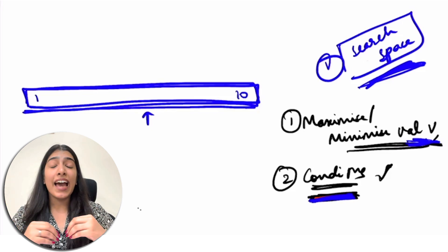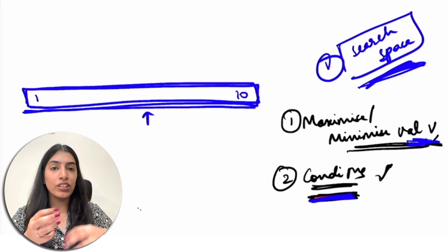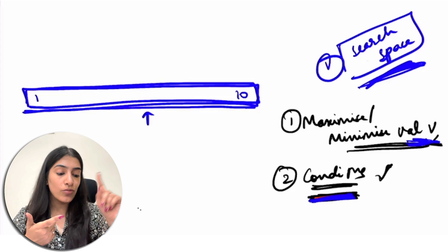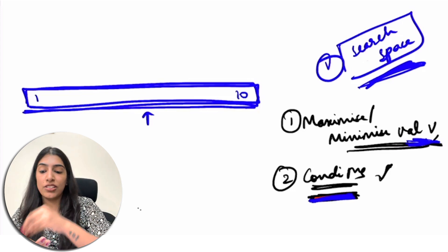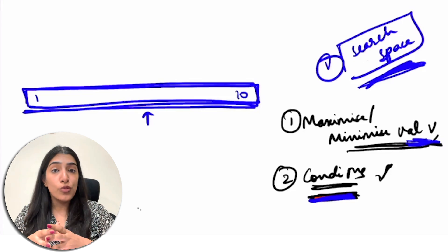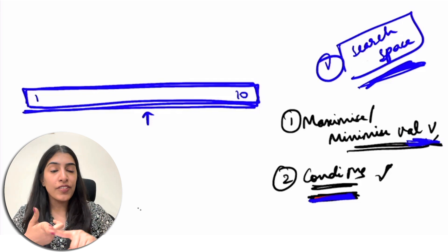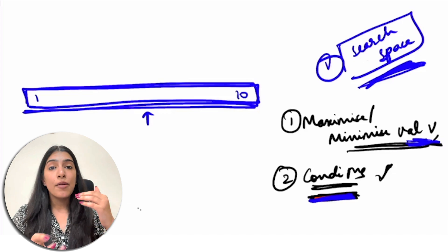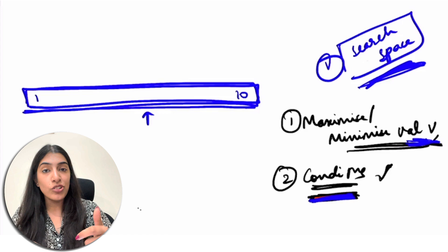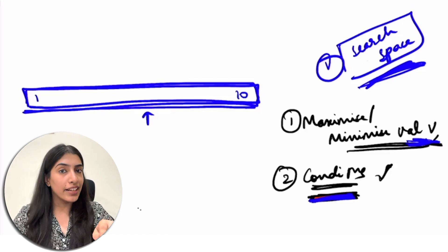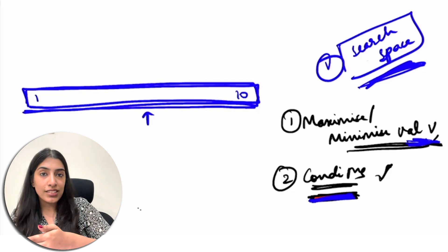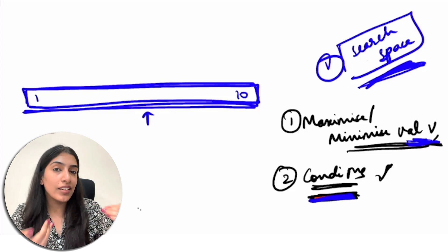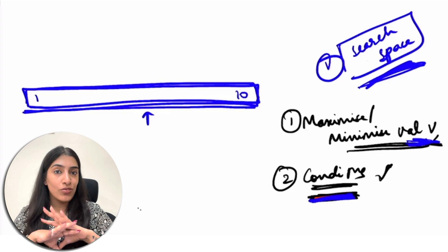I completely understand if it's not fully clear right now because I'm talking about abstract things. From tomorrow when we take examples it will be much clearer — you'll be able to identify the search space, understand V, and see how the conditions behave. For now, I want you to go back and read the three questions, try identifying the value V, the search space, and the conditions. When I get stuck the first time, I should not get stuck the next time — that's what we want to develop.